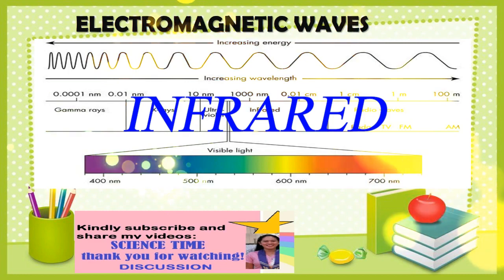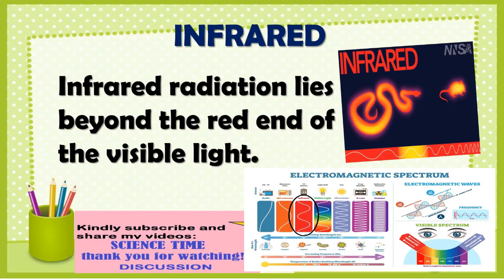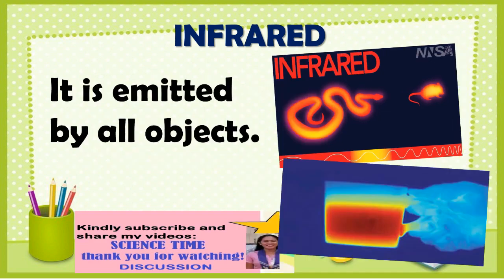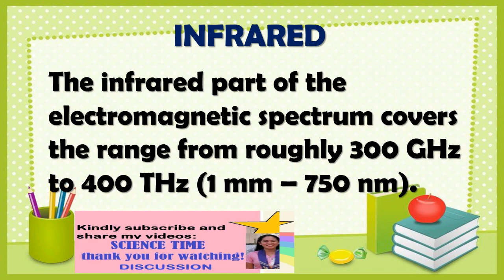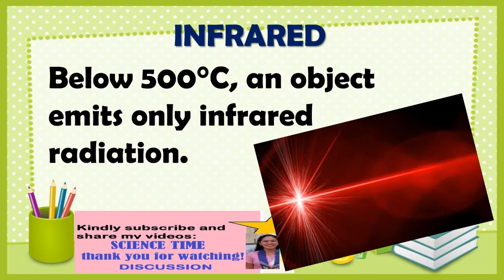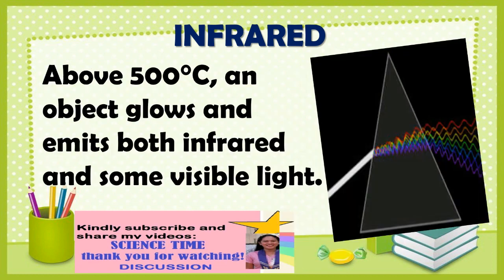Infrared radiation lies beyond the red end of visible light. It is emitted by all objects, and the amount and wavelength of radiation depend on temperature. The infrared part of the electromagnetic spectrum covers the range from roughly 300 GHz to 400 THz, or 1 mm to 750 nm. Below 500 degrees Celsius, an object emits only infrared radiation. Above 500 degrees Celsius, an object glows and emits both infrared and some visible light.